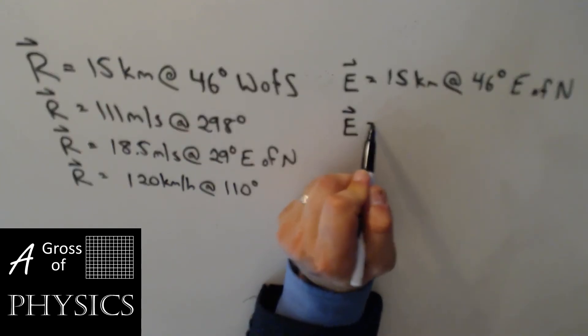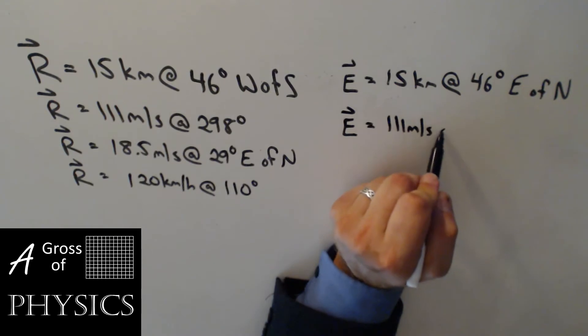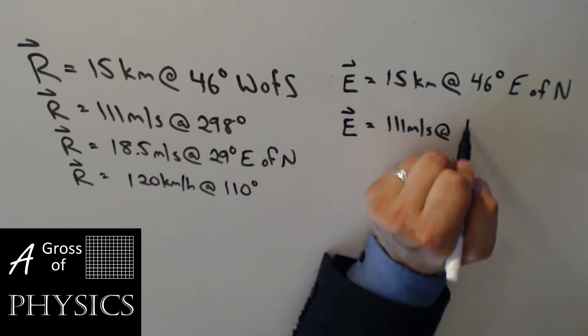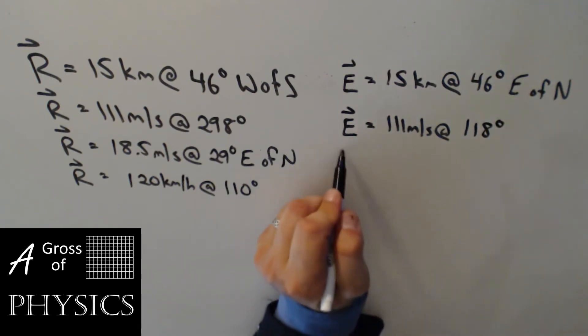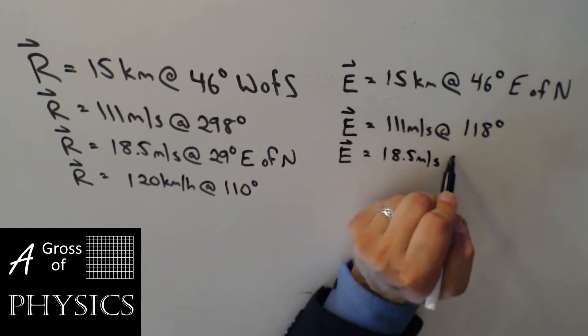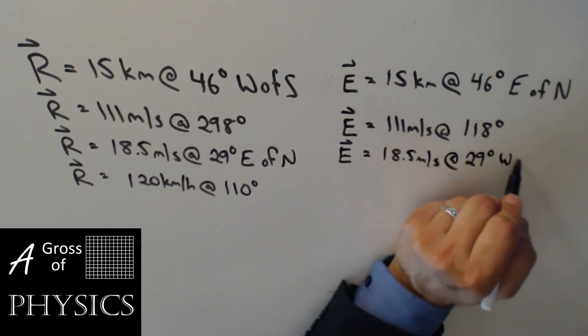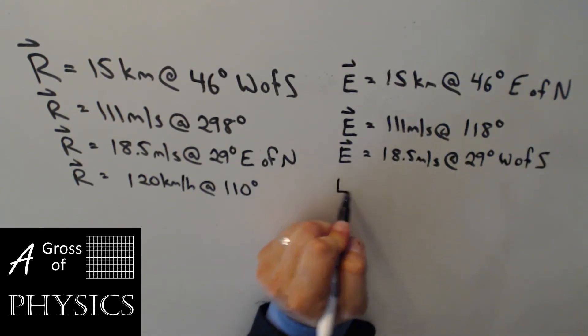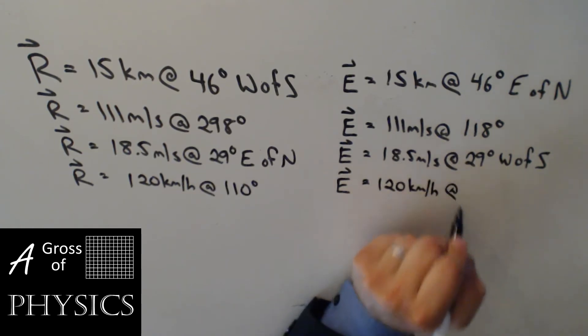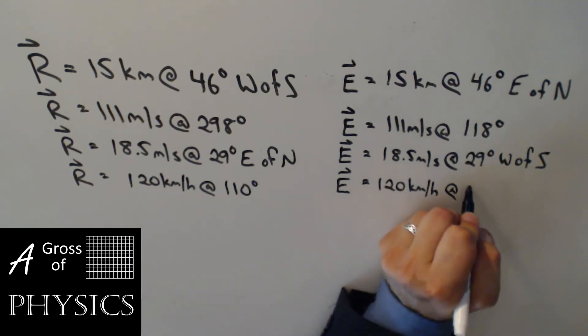The equilibrant for the second one is 111 meters per second at. And since we're dealing with the xy coordinate system, we have to subtract 180 degrees from the 298, and we get 118 degrees. The third one, 18.5 meters per second at 29 degrees west of south. And then finally, 120 kilometers per hour at 110 plus 180, and that's 290.